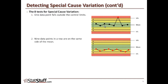The second test: nine data points in a row are on the same side of the mean. At any point, if you have nine data points in a row that all fall on the same side of the mean — either all below or all above — that's something worth flagging.